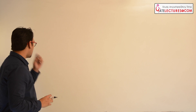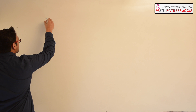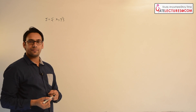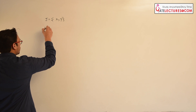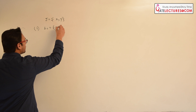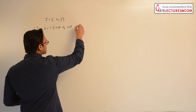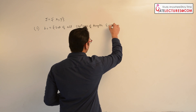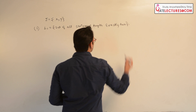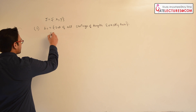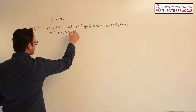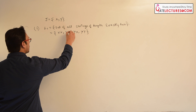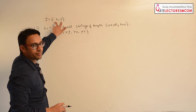Let us say we have the following alphabet: sigma is equal to {x, y}. Language L1 is the set of all strings of length exactly 2. Therefore the strings will be: xx, xy, yx, yy. So these are all the strings which are possible over these two alphabets whose length is exactly 2.